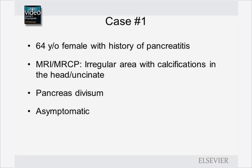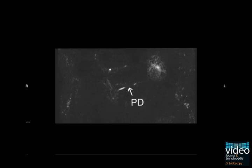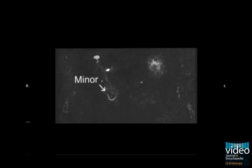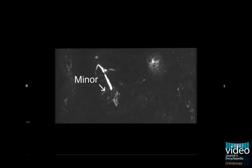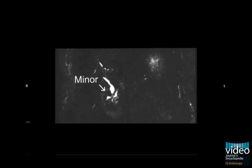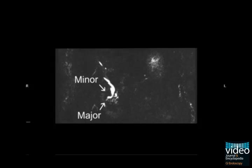The main PD is seen terminating at the minor papilla. We follow the CBD, which terminates at the major papilla, suggesting divisum. We also see this irregular calcified area in the head of the pancreas.